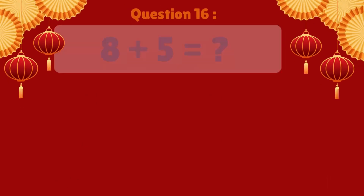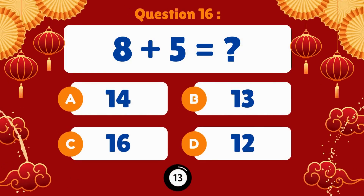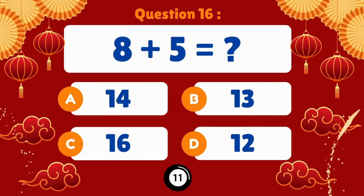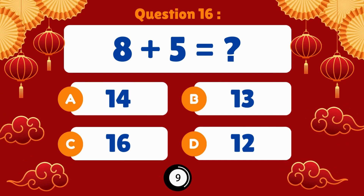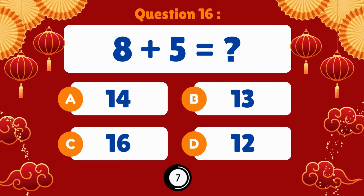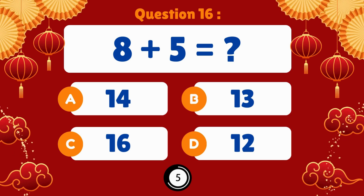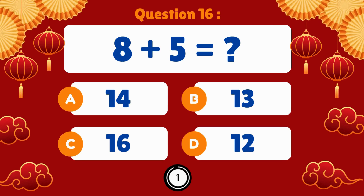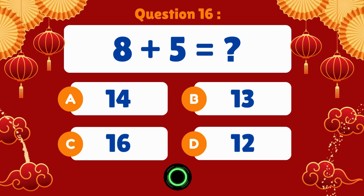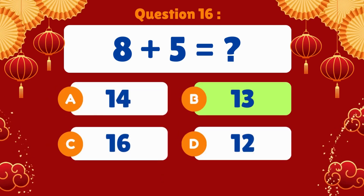Eight plus five. Eight plus five is equal to thirteen.